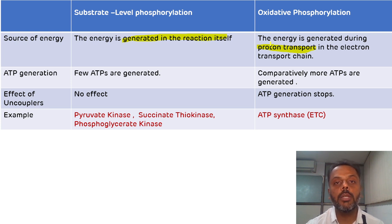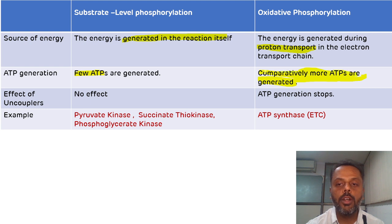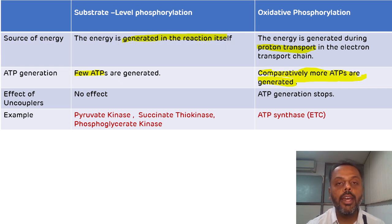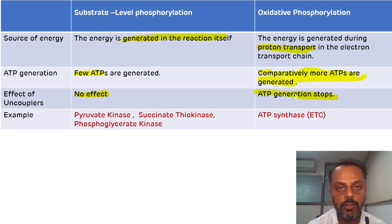The fifth difference is related to ATP generation. The ATP synthesized in substrate level phosphorylation is very few, whereas more ATP is generated in oxidative phosphorylation. Another major difference is the effect of uncouplers: uncouplers have no effect on substrate level phosphorylation, but they do have an effect on the electron transport chain, meaning they affect oxidative phosphorylation.